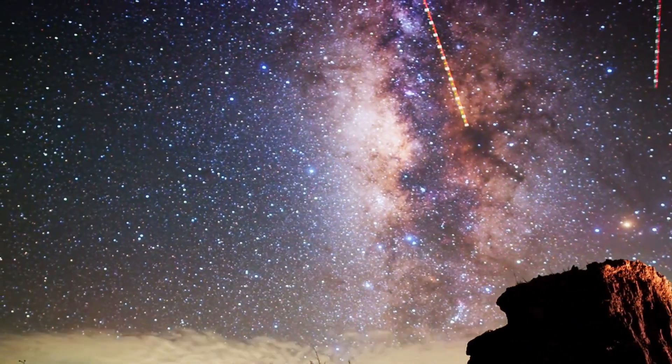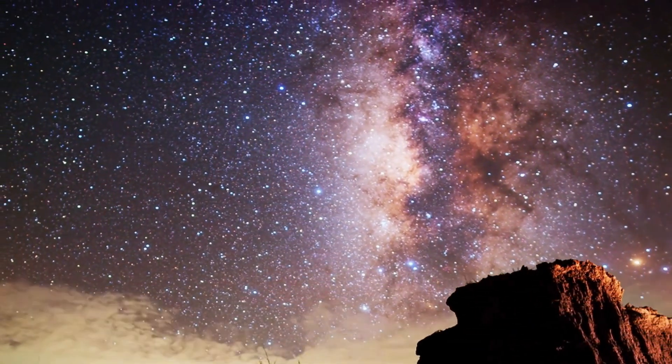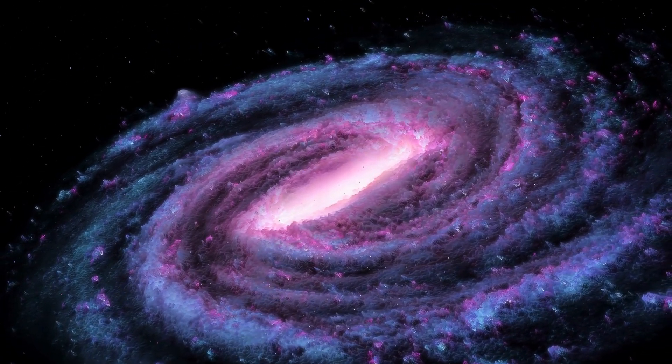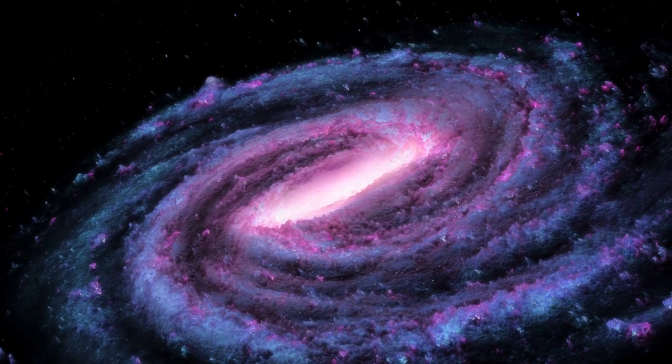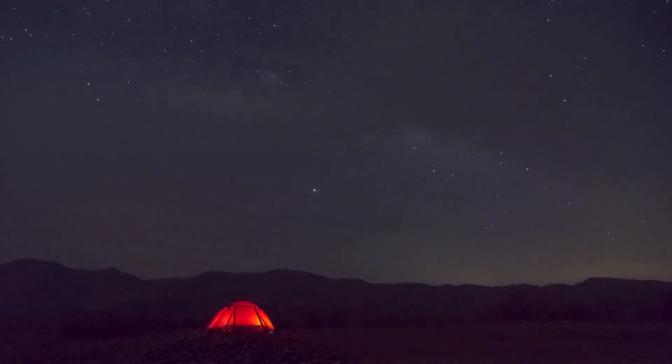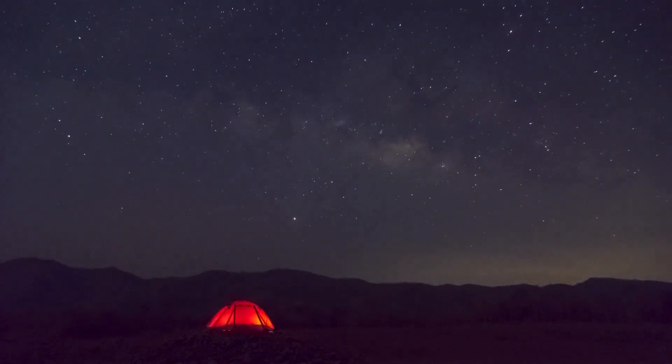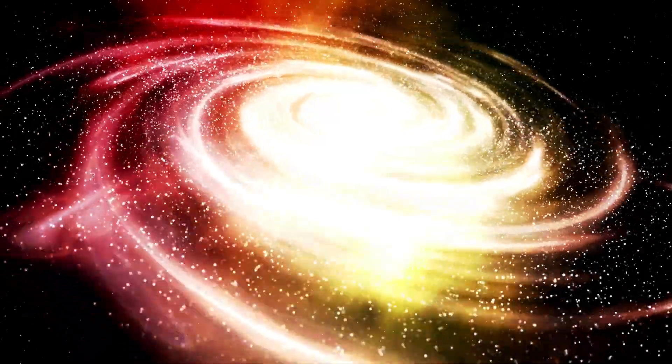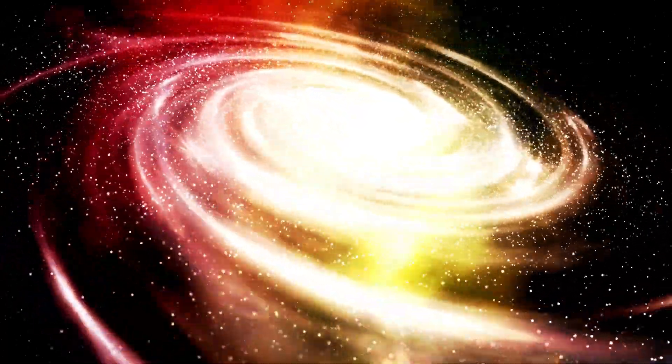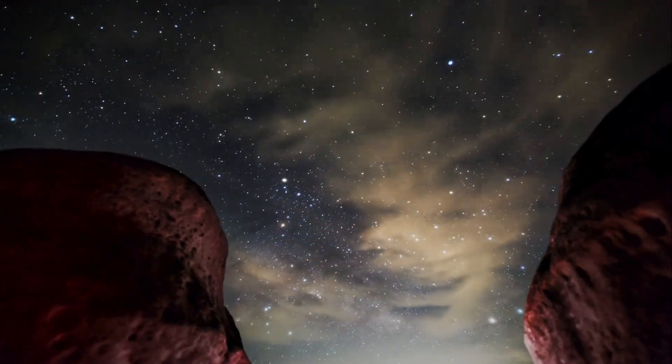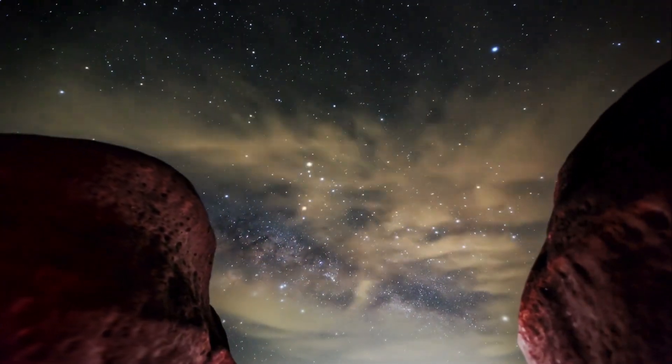The supernova could also help refine current models of how elements are distributed throughout the universe. When massive stars like Betelgeuse explode, they scatter elements into space, enriching the interstellar medium with the building blocks necessary for life. This process, known as stellar enrichment, plays a key role in the formation of new stars, planets, and other celestial bodies. By studying the aftermath of Betelgeuse's explosion, astronomers will be able to map the distribution of these elements across the universe and gain a better understanding of the recycling of matter that drives cosmic evolution.